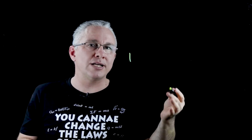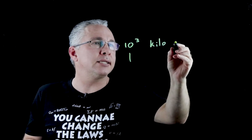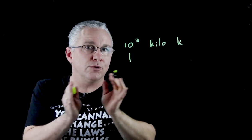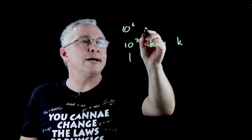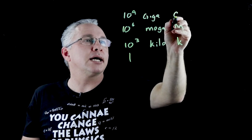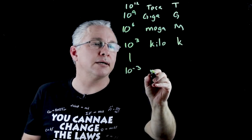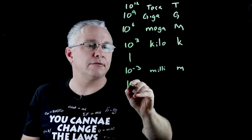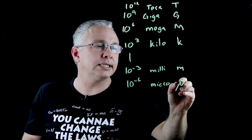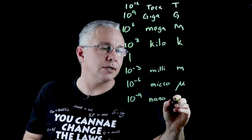I'm going to list mainly the basic ones, and most of them are to the power of three or multiples thereof. Starting with a value of one, where we don't have a prefix. Going up: 10 to the power of 3 is kilo, symbol k. 10 to the power of 6 is mega, symbol capital M. 10 to the power of 9 is giga, symbol capital G. And 10 to the power of 12 is tera, symbol capital T. Going down: 10 to the negative 3 is milli, symbol m. 10 to the negative 6 is micro, symbol the Greek letter mu. And 10 to the negative 9 is nano, symbol N.